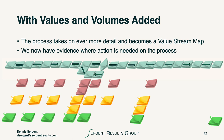Once we have the values and volumes added together, we have an opportunity for ever more detail. This is where a process map becomes a value stream map. It's built into Excel so that we can capture the data in a tool that will help us analyze where the first opportunities are for improvement.